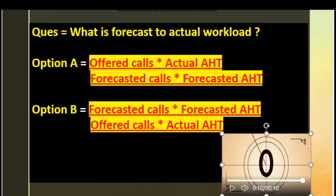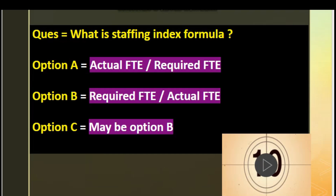The fourth question is: what is the staffing index formula? Option A: actual FTE divided by required FTE. Option B: required FTE divided by actual FTE. Option C: maybe option B.